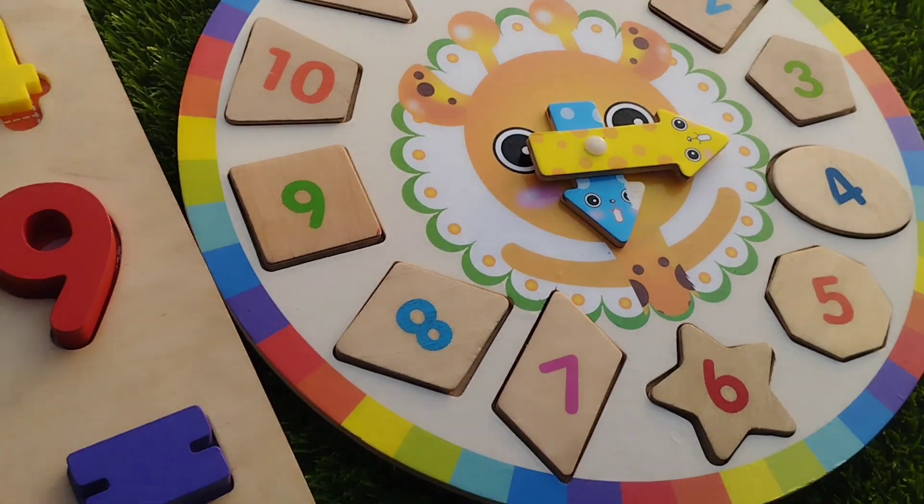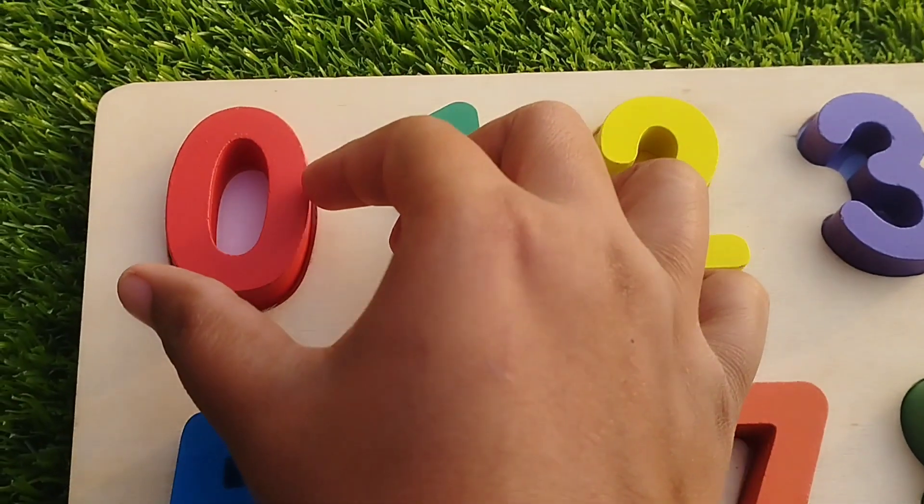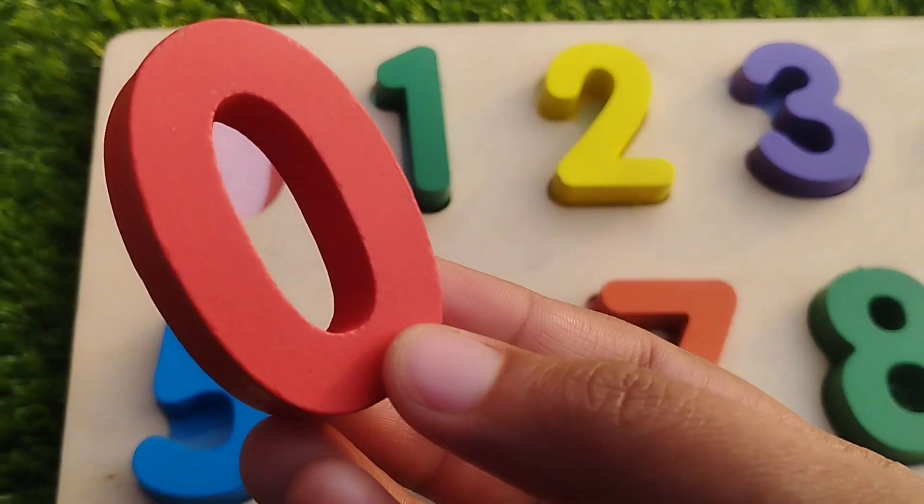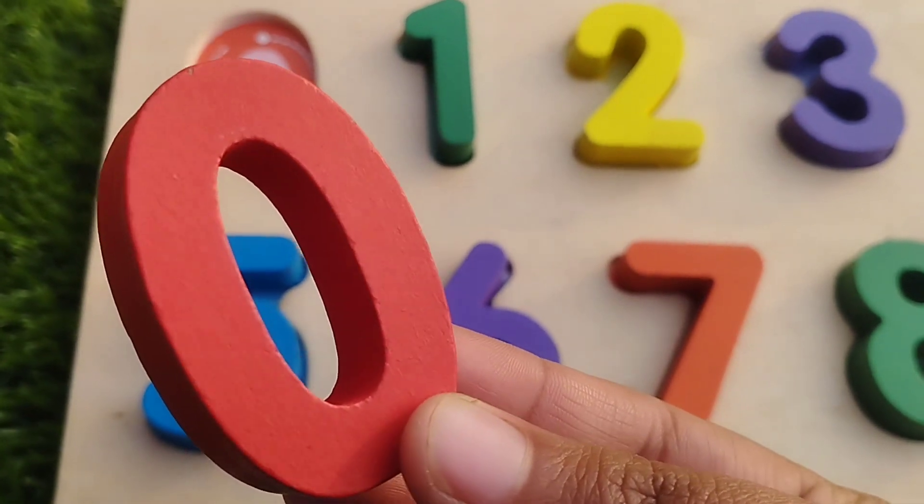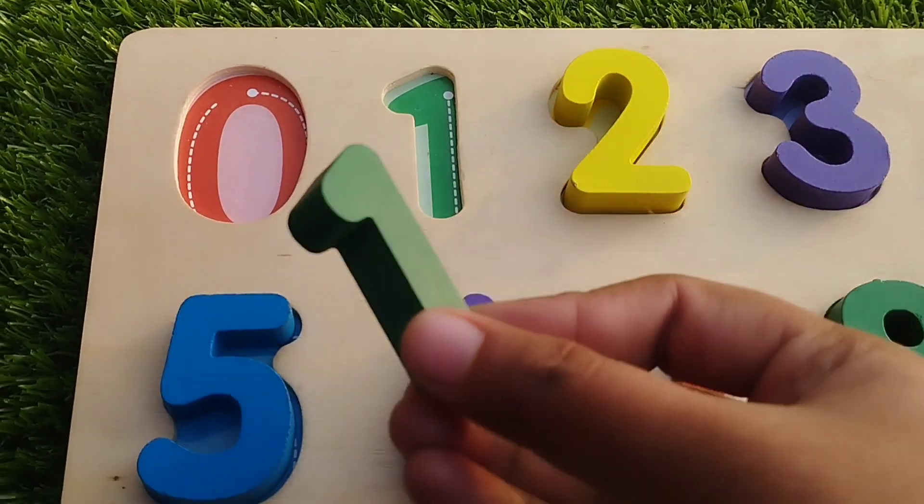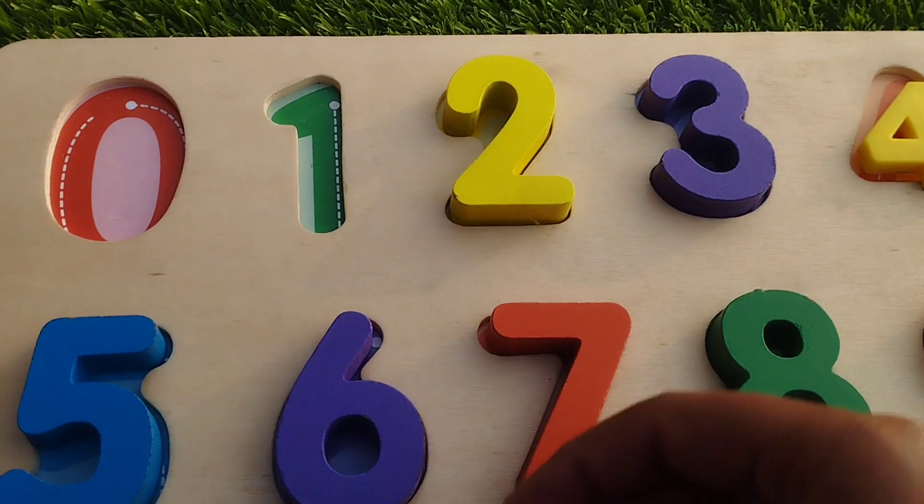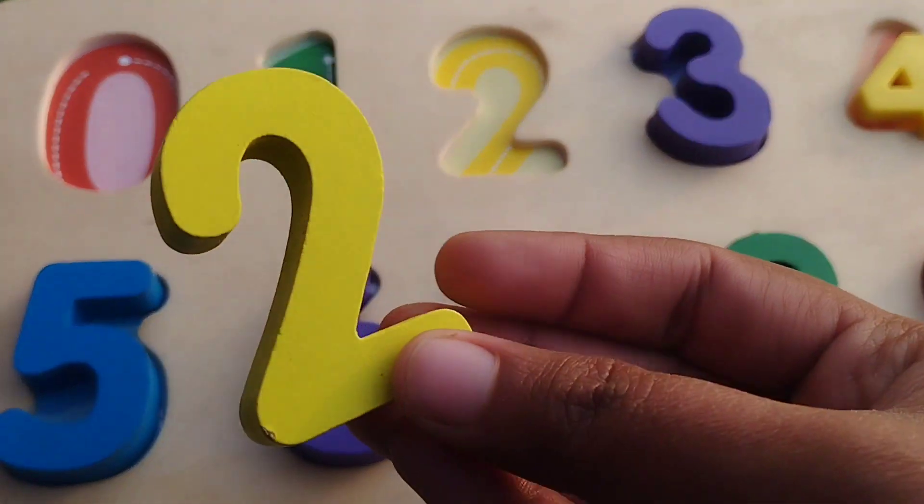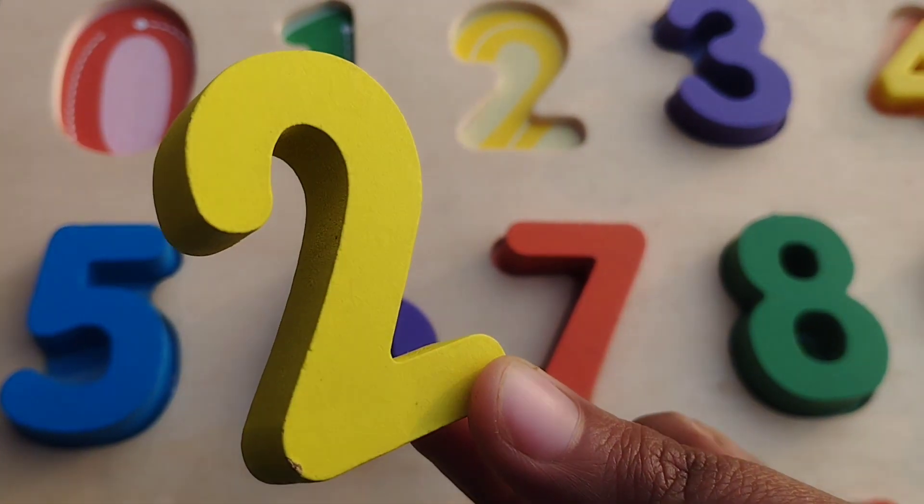First point are numbers. The first number is number 0. This is number 0. The next number is number 1. 2. Number 2.